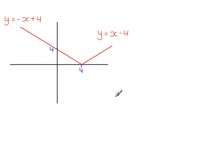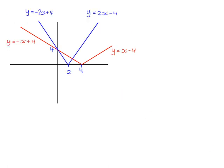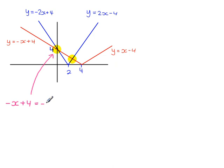Now we're going to put both modulus graphs together. There are two points of intersection between these modulus functions. This one here has an x-coordinate of 0, which is obvious from the graph. If you had to work it out algebraically, it's the line y equals minus x plus 4 that intersects with the line y equals minus 2x plus 4. Solving simultaneously: minus x plus 4 equals minus 2x plus 4. Adding 2x to both sides gives x plus 4 equals 4, so x equals 0, which we already knew from the graph.